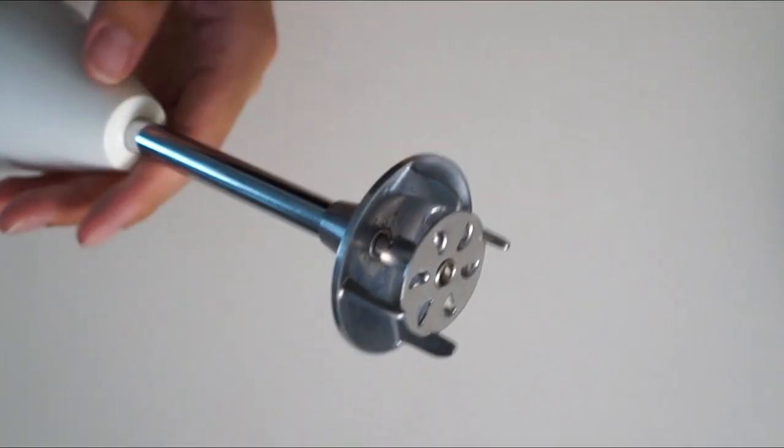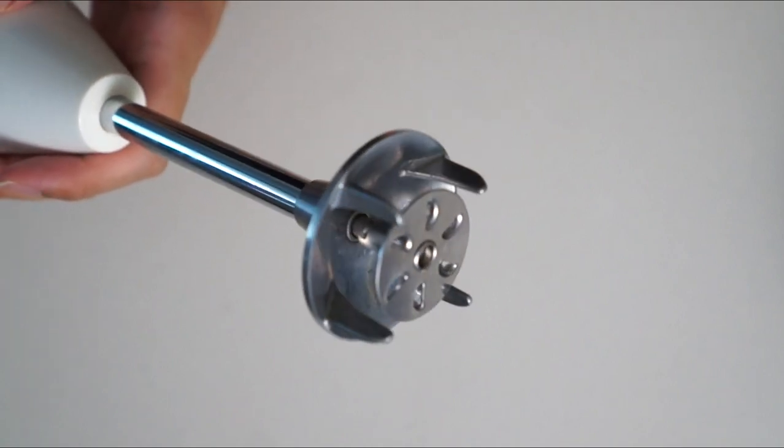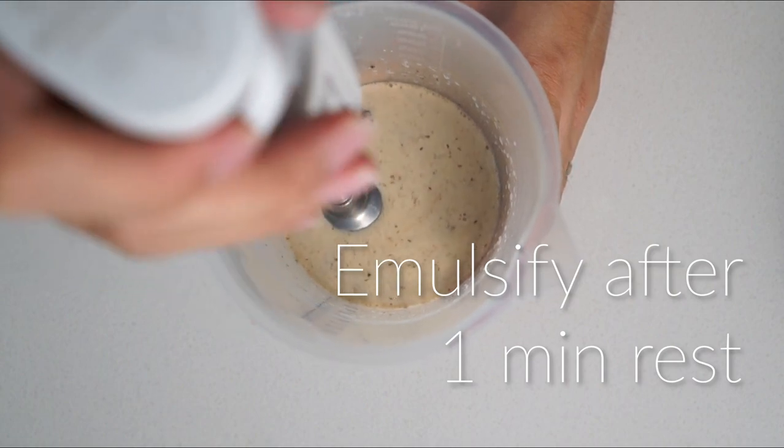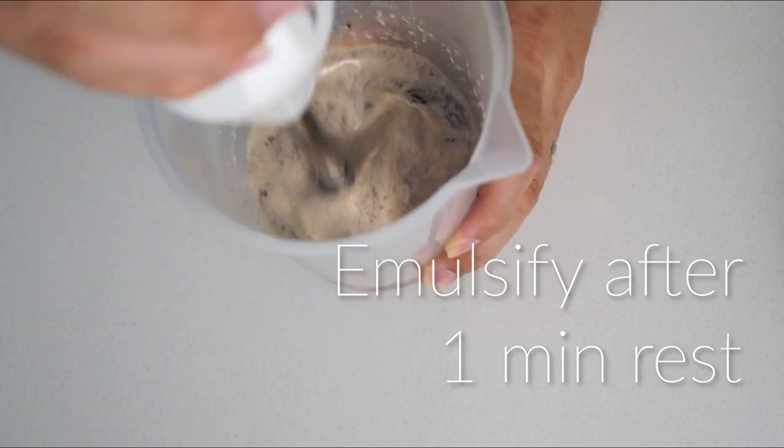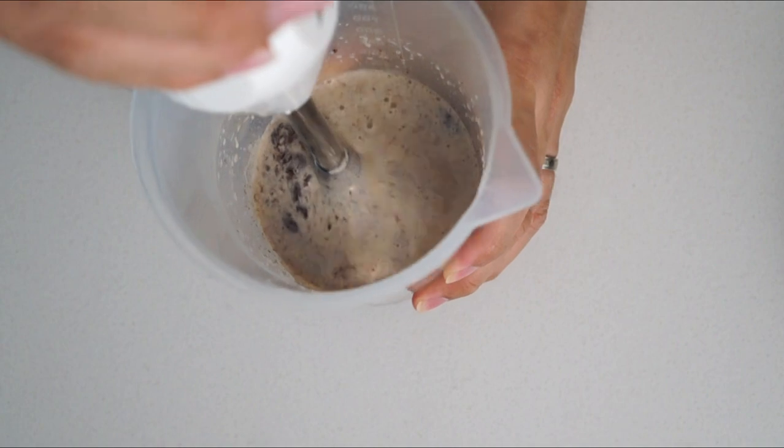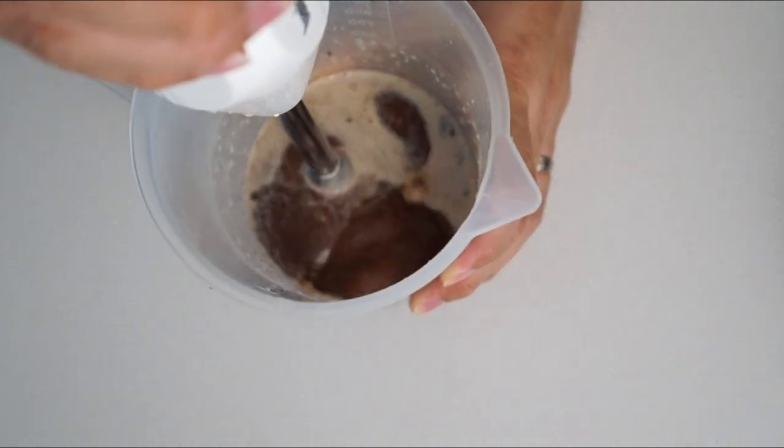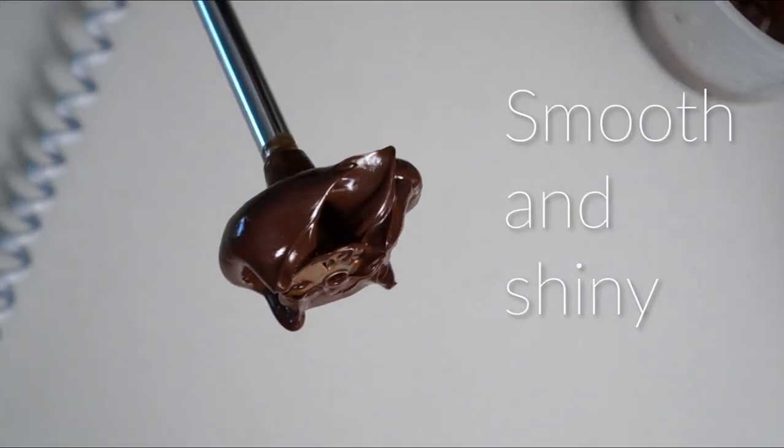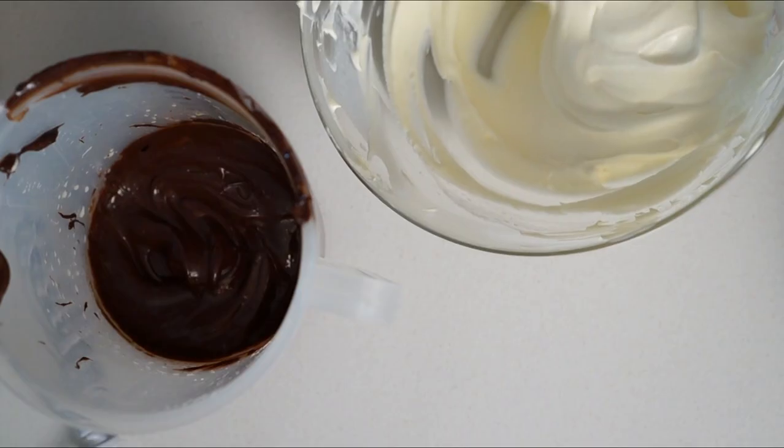Here I'm using a hand blender with an emulsifying attachment. This will make sure we have a perfect emulsion. Once the chocolate has rested for a minute, go ahead and use your hand blender to emulsify the mixture. Here is the final texture of the ganache. It should be perfectly smooth and shiny.